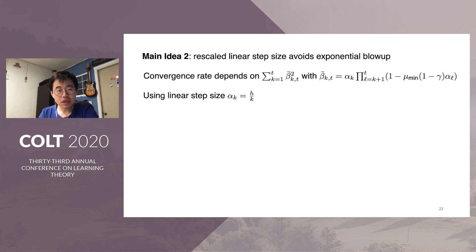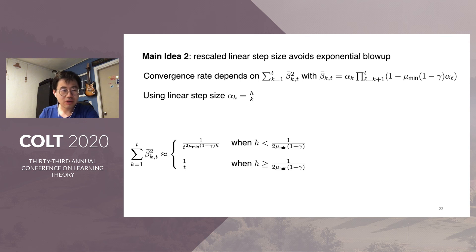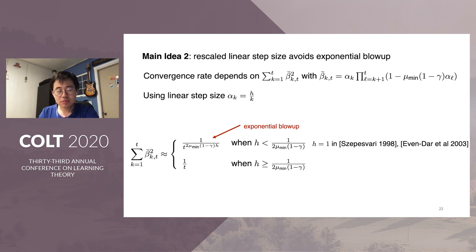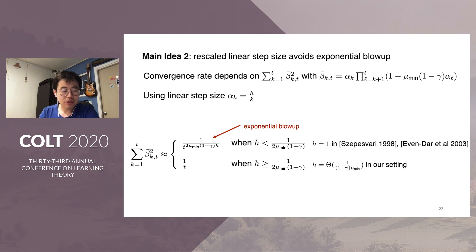Our recursive error decomposition shows that the convergence rate depends on a certain beta sequence. If we plug in the commonly used linear step size alpha_k = h/k, with h being some constant, then by simple arithmetic computations this beta sequence can be computed explicitly. Our computation reveals a fixed transition: when h is small, the beta sequence will exhibit an exponential blowup, while when h is large enough, the exponential blowup is avoided. This explains why some earlier work has the exponential blowup — in that work, h is set to 1, which falls in the regime where the exponential blowup occurs. We can avoid the exponential blowup by using a large enough h. This is the key idea behind avoiding the exponential blowup.